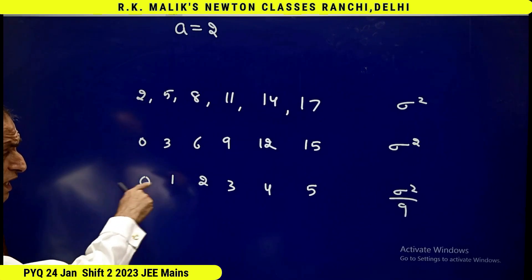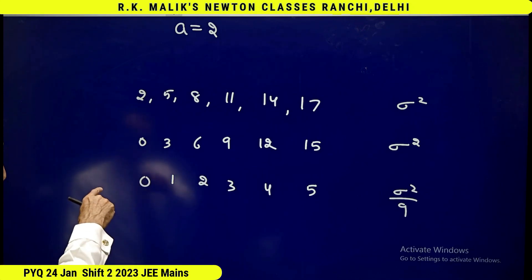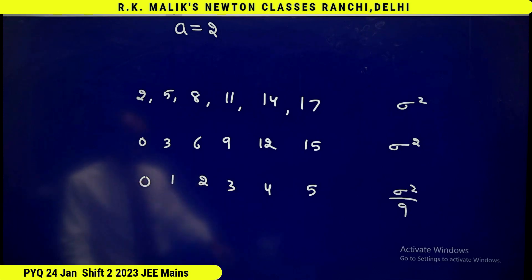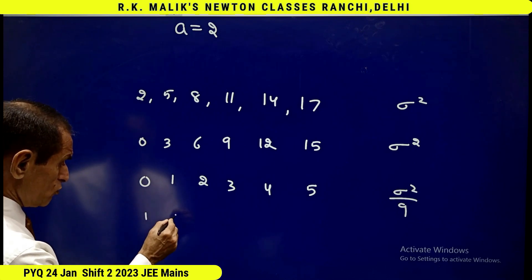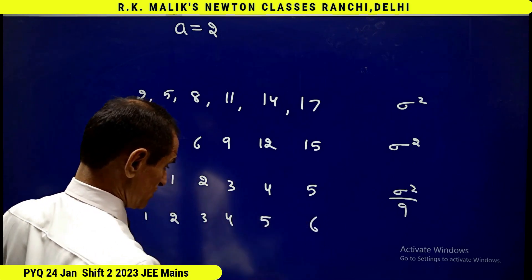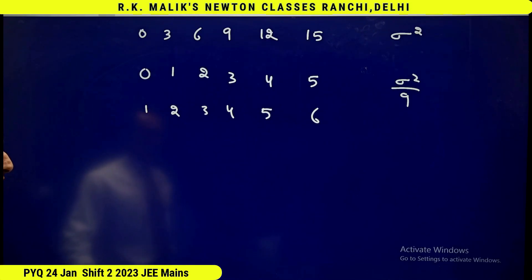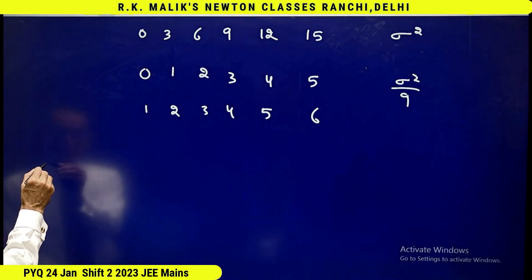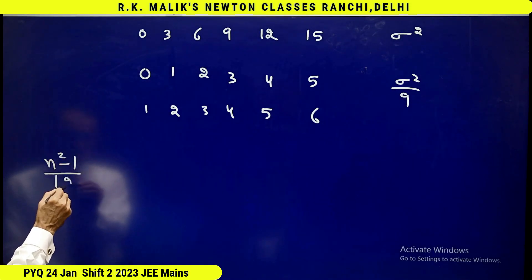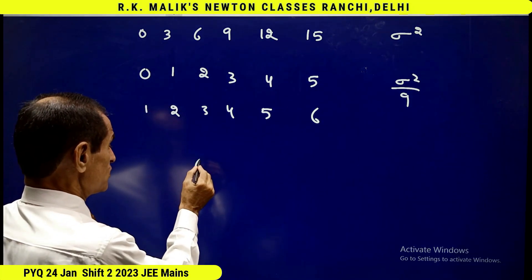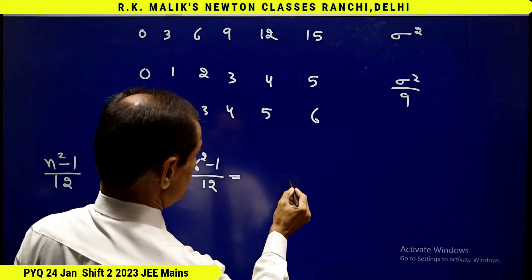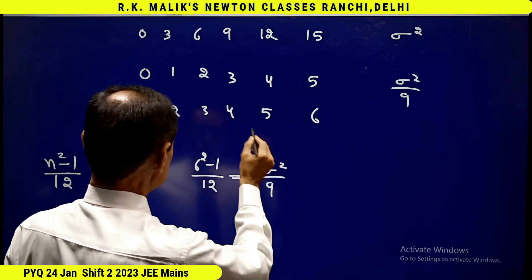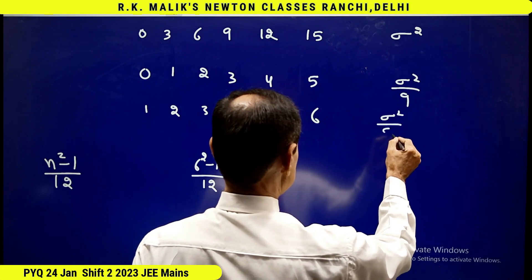Now I add 1 to all these numbers. By adding or subtracting a fixed number from all numbers, it makes no difference to the variance. Adding 1 gives the numbers 1, 2, 3, 4, 5 and 6. The variance of first n natural numbers is n squared minus 1 by 12. Hence, the variance of these numbers will be 6 squared minus 1 by 12, which equals 35 by 12. And this is also equal to sigma square by 9.